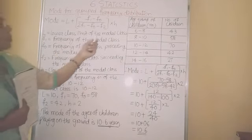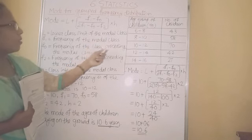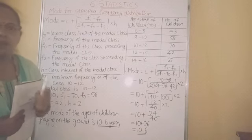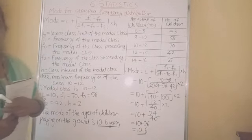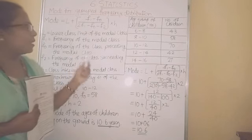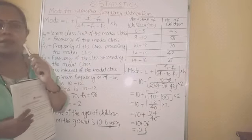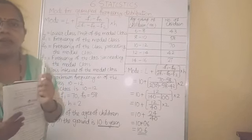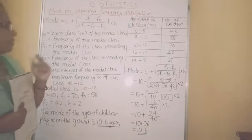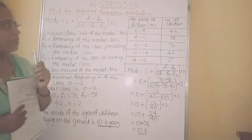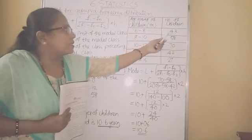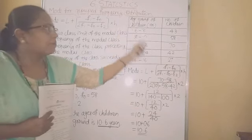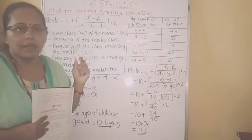If you observe this, you come to know that each value depends on the modal class. That means if we want to calculate mode of the given frequency distribution table, we have to first find out which is the modal class. The class which contains maximum frequency is the modal class.